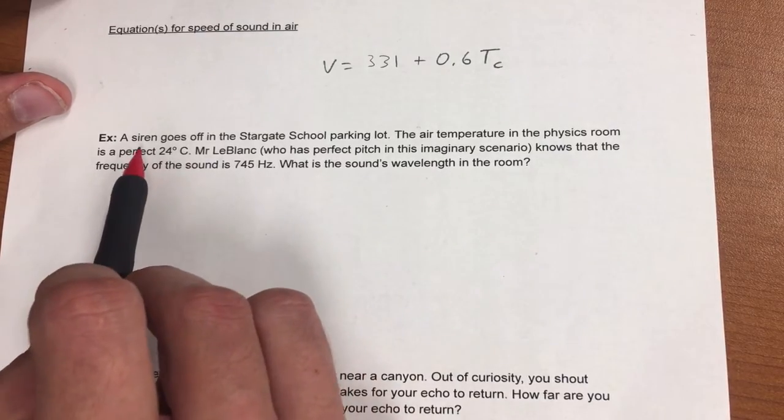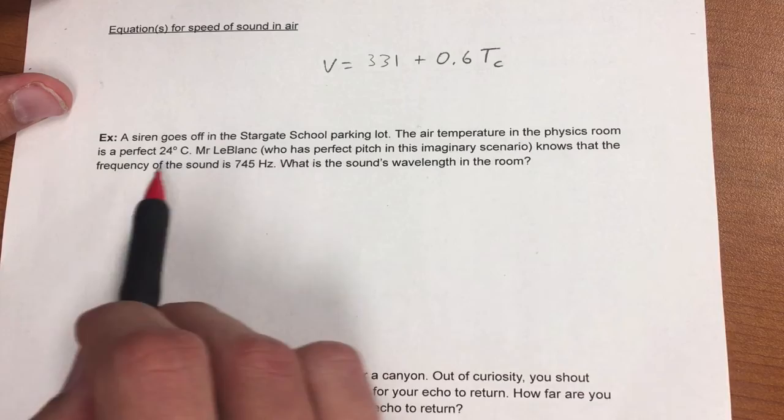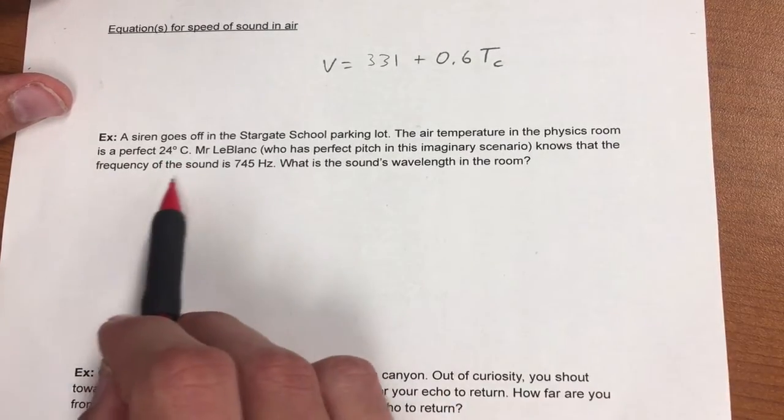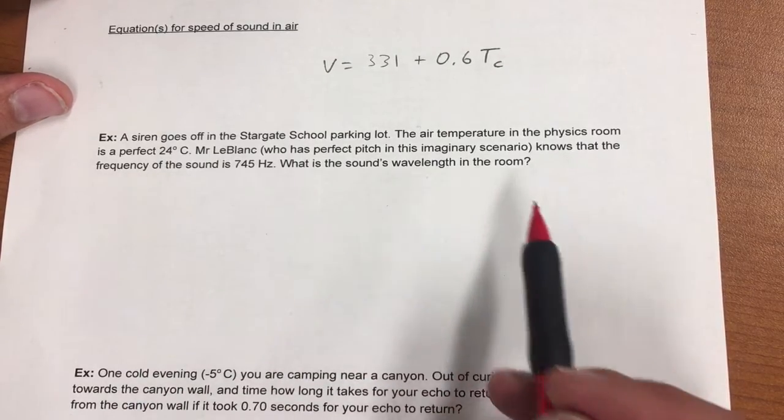In this first example, a siren goes off in the Stargate School parking lot. The air temperature in the physics room is a perfect 24 degrees Celsius. Mr. Blanc knows that the frequency of the sound is 745 hertz. What is the sound's wavelength in the room?